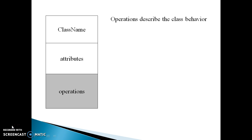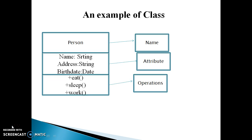The third compartment is the operation. The operation describes the class behavior and it is declared in the third compartment. This is a simple example of a class where the rectangular box is divided into three compartments: the name section, the attribute section, and the operation compartment.